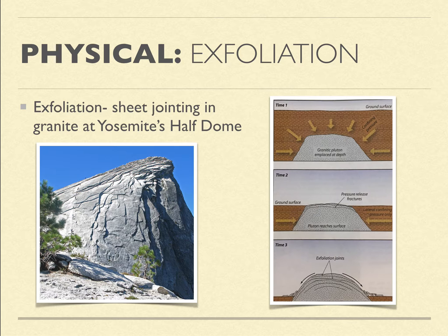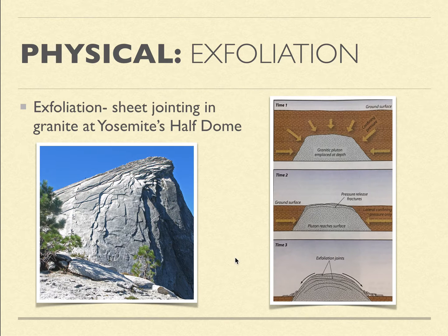What about Half Dome — it's only half a dome. Glaciation took part of that away, so that's a different process. Had a glacier not been involved in the Yosemite Valley, it would not look the same way as it does.